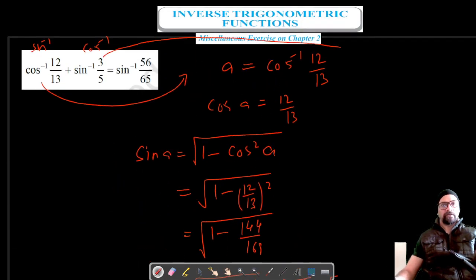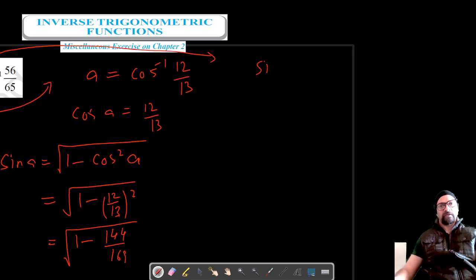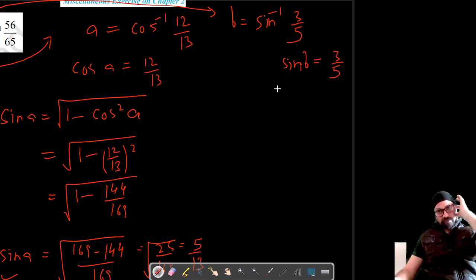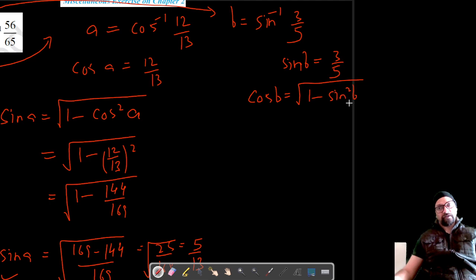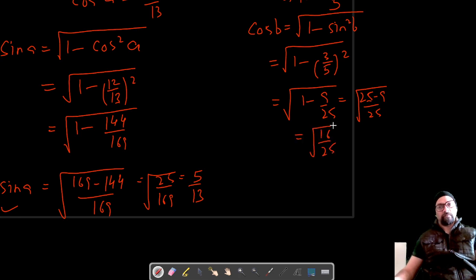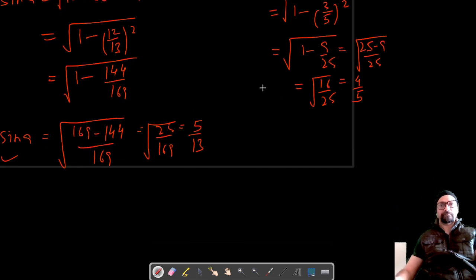Now let's move on to the other trigonometric function, sin⁻¹(3/5). Let this be equal to b, so sin b = 3/5. We can find cos b = √(1 − sin²b) = √(1 − (3/5)²) = √(1 − 9/25) = √(16/25) = 4/5. So cos b = 4/5.